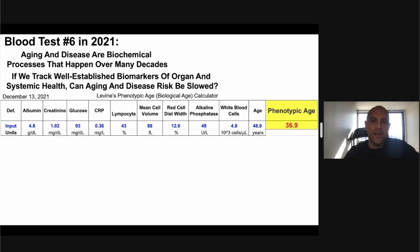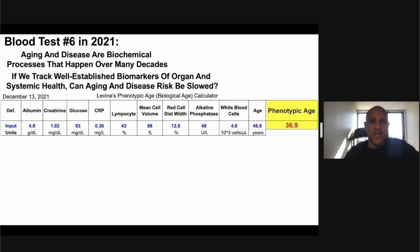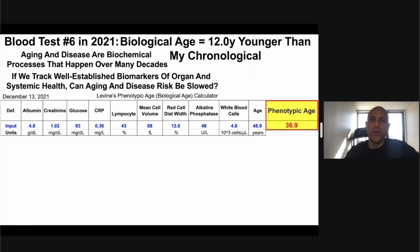This is a biological age calculator. I see Morgan on the call — thanks for developing this tool because I use it so often. I measured my blood test for the sixth time in 2021. Morgan's biological age calculator includes nine blood test biomarkers: albumin, creatinine, glucose, et cetera. When you plug in that data in conjunction with your chronological age, it gives your biological age — otherwise known as phenotypic age — which in this case was 36.9, which was 12 years younger than my chronological age.